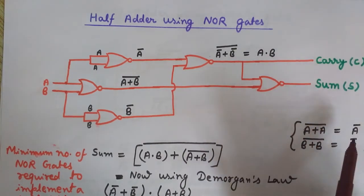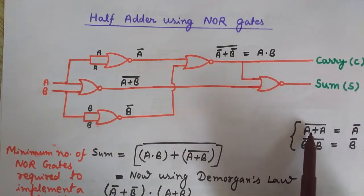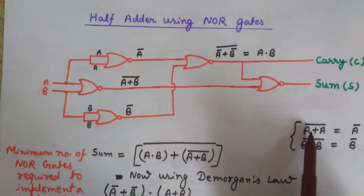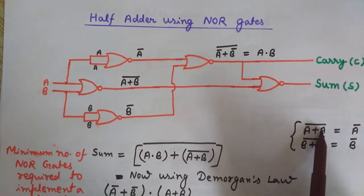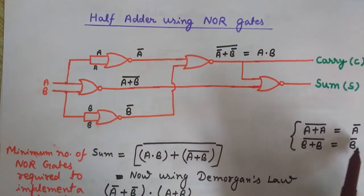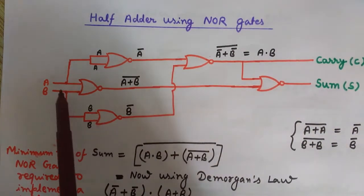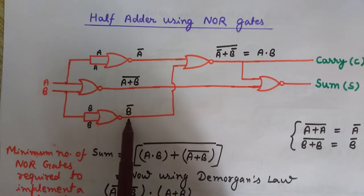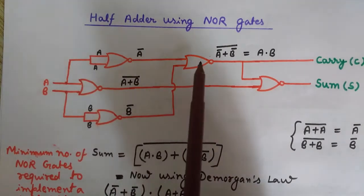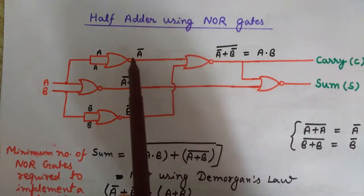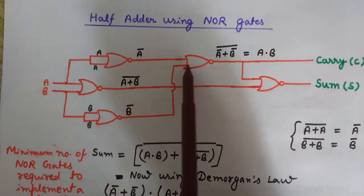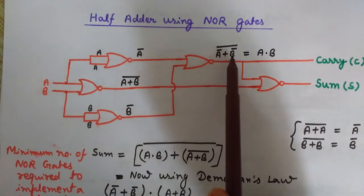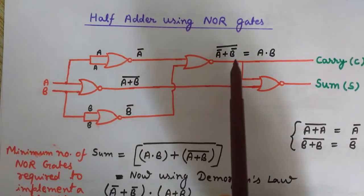Since both inputs are A, we get A+A which gives A̅ at the output — because A+A = A, and the NOR gate complements it, so we get Ā. In the same way, input B applied to both inputs of another NOR gate gives B̄ as output. Now this NOR gate has first input Ā and second input B̄.